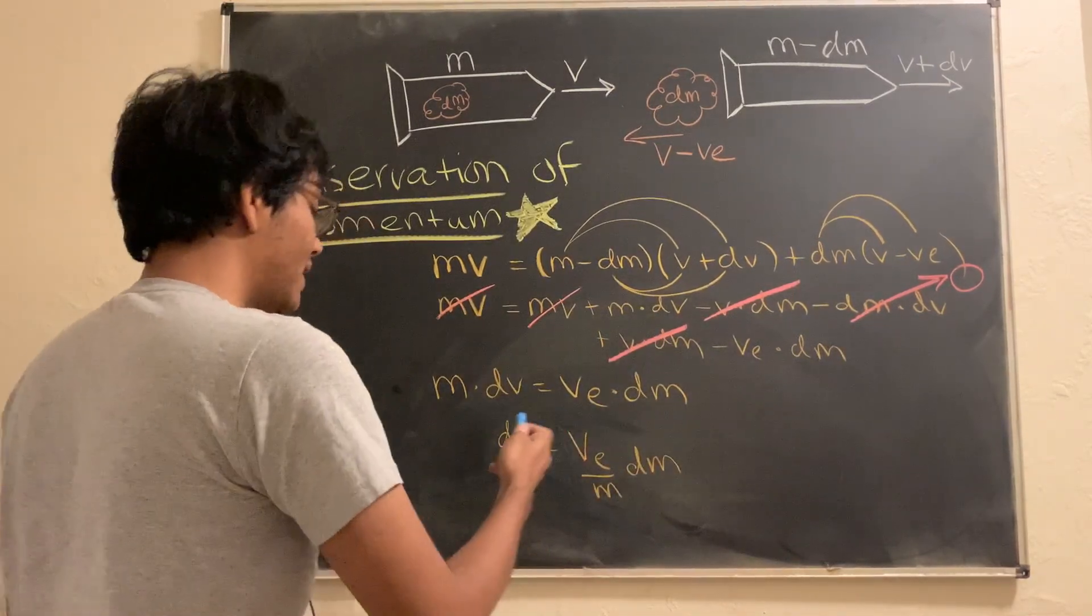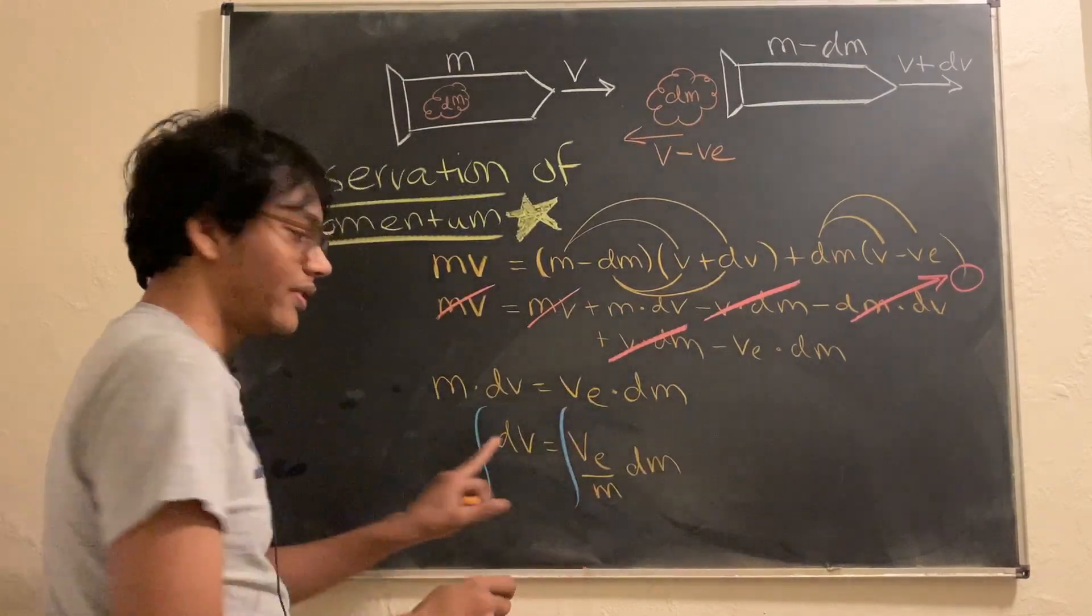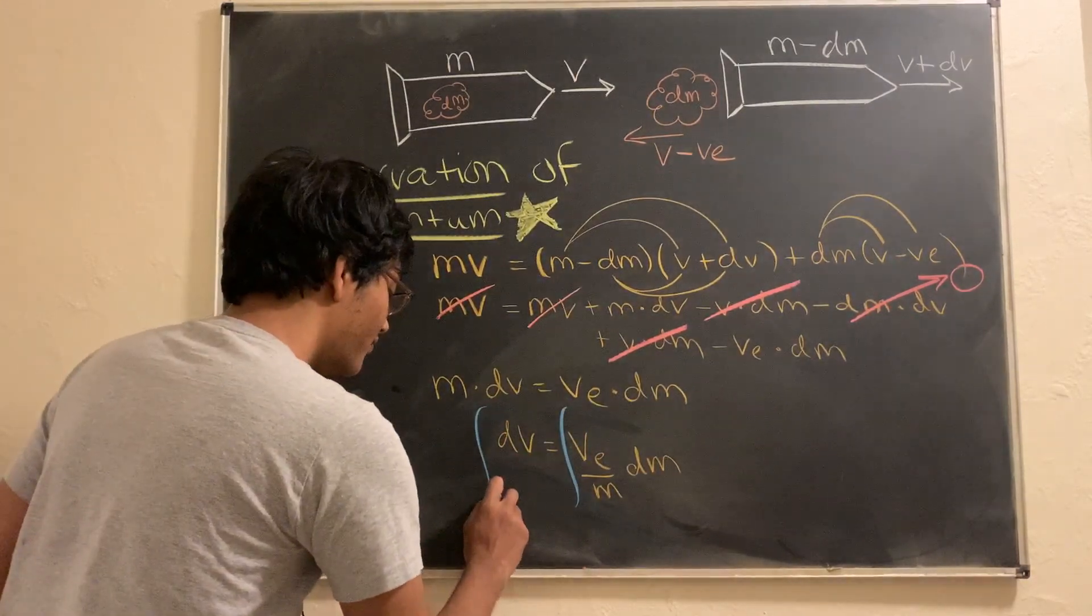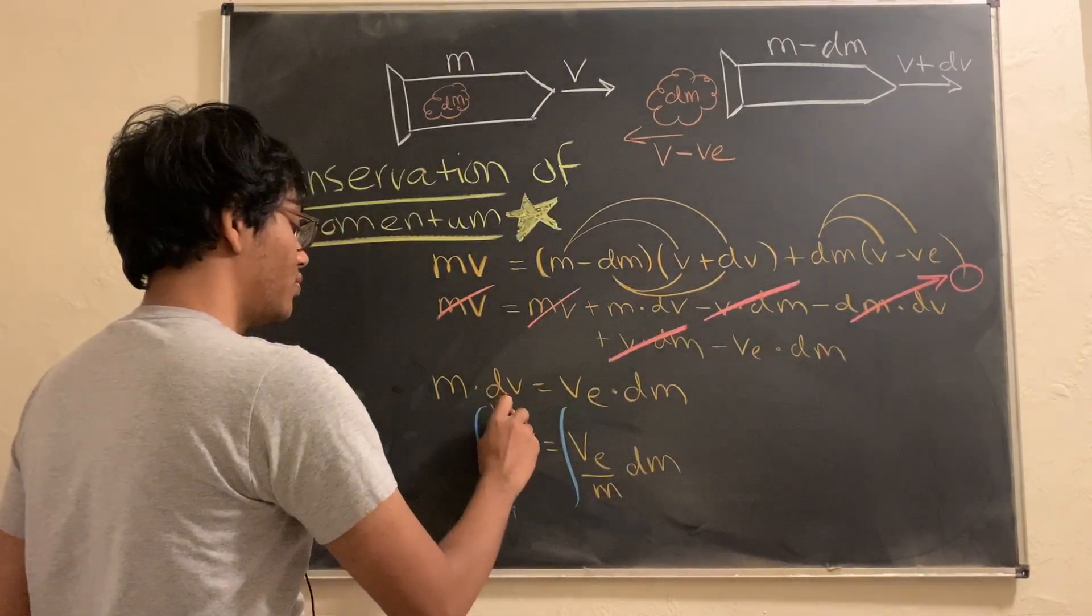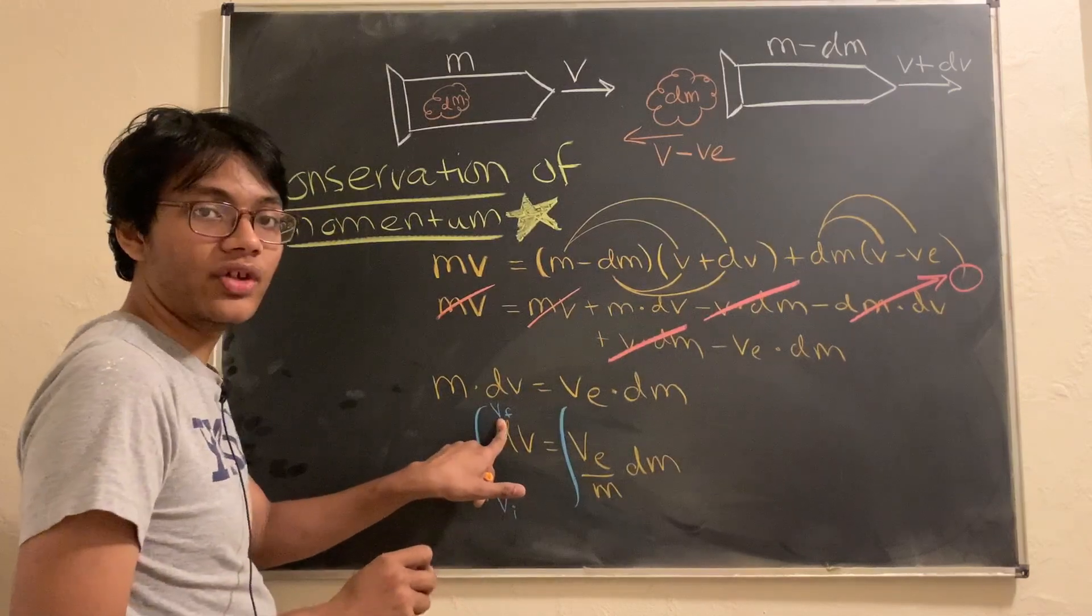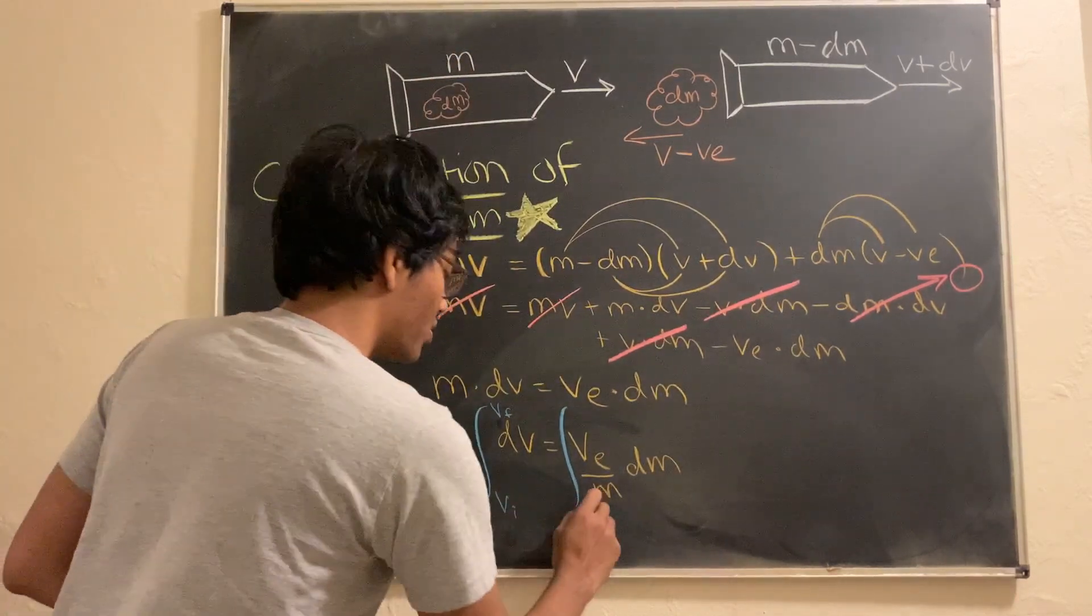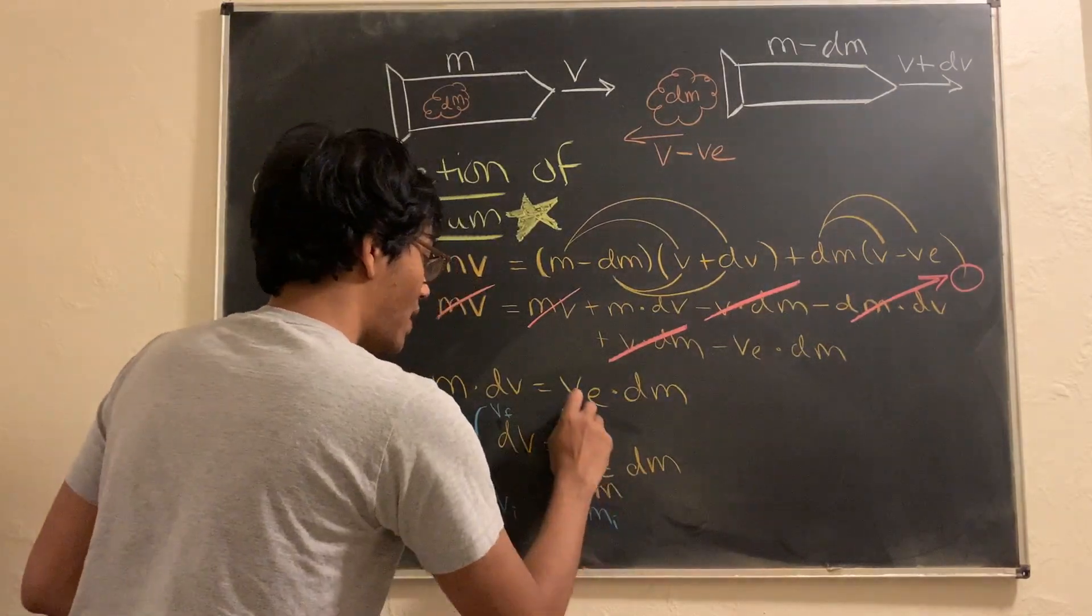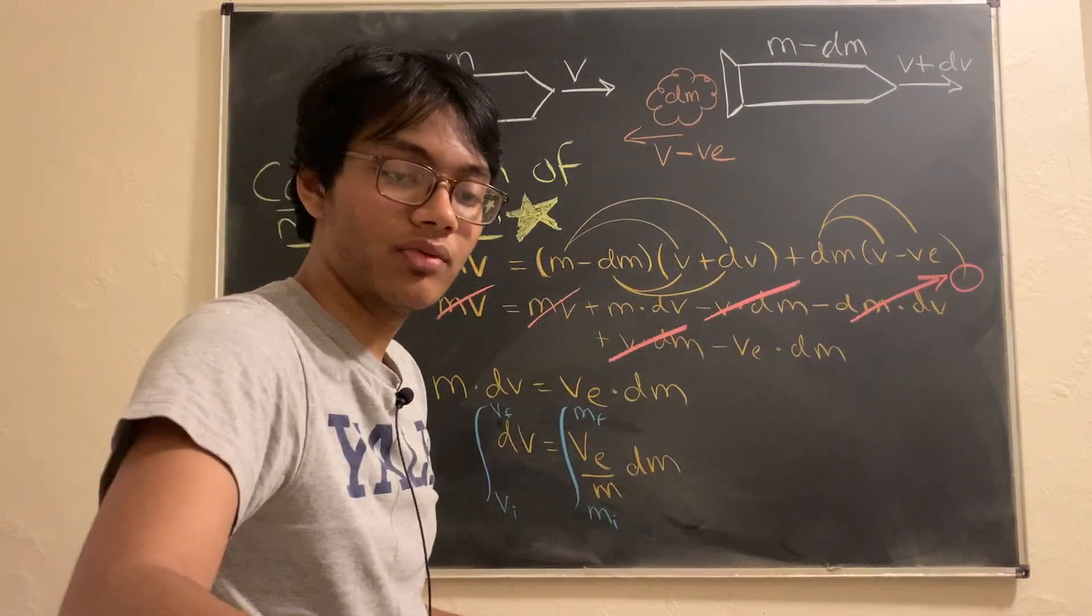So now let's use our calculus abilities to go ahead and integrate both sides. Left hand side, we're integrating with respect to V. And we're going from the launch pad V sub i to the end of our journey as soon as we reach the end of the atmosphere V sub f. Here, we're going from M sub i to M sub f since we're integrating with respect to M.